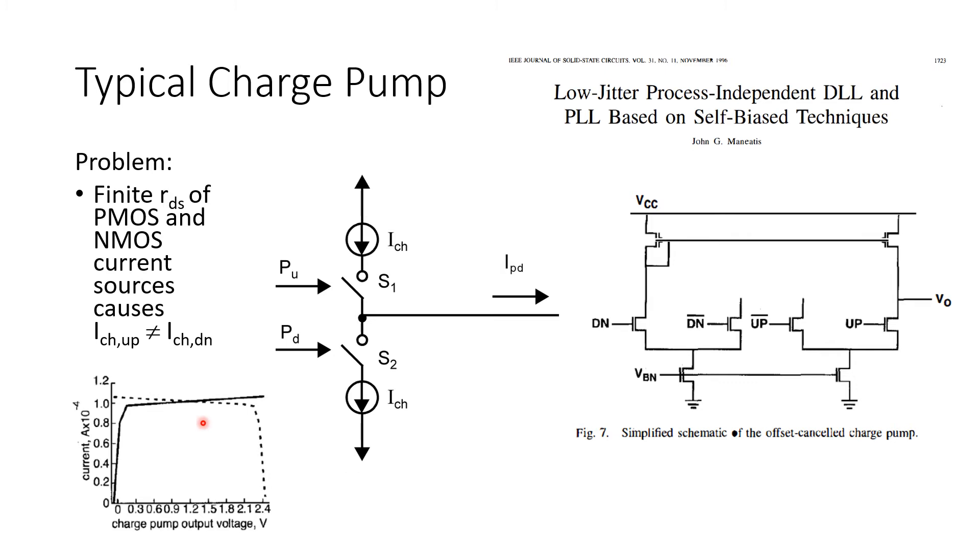So what it means is that the pull-up and pull-down current depend on the charge pump output voltage, something like this plot. And the worst part is they vary in opposite ways. So if the output voltage is high, this PMOS transistor will source less current.